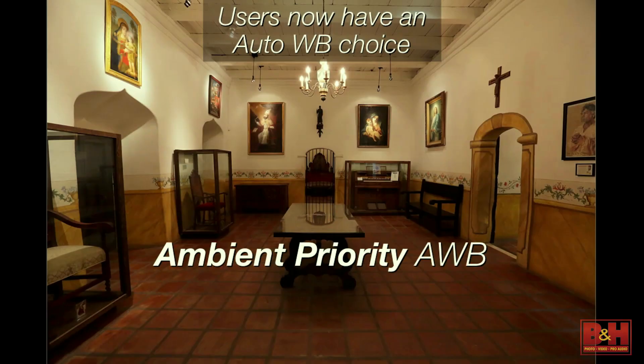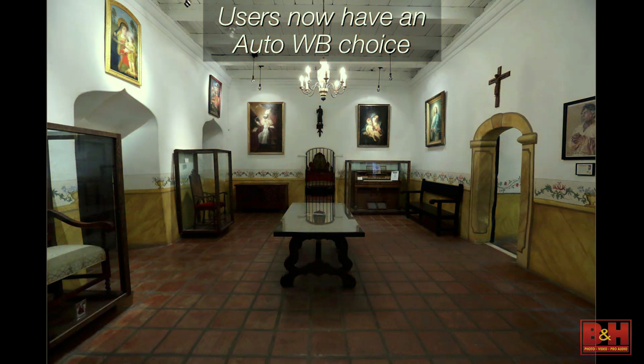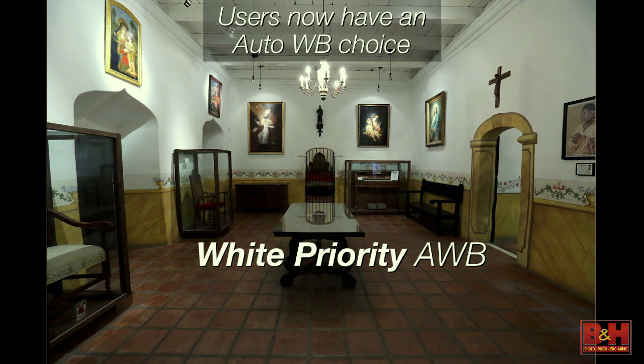Now we give you a choice. You can use what we call ambient priority auto white balance — that's the normal setting and behaves exactly as before, giving some deliberate warmth in tungsten lighting. Or you have a second option called white priority auto white balance, which does its best to clean the whites up and give you a clinical-looking white. This white priority setting really only matters in tungsten or similar lighting — outside at high noon or on an overcast day, both settings behave the same.